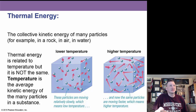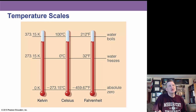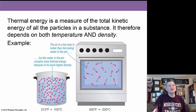Thermal energy is the collective kinetic energy of many particles related to temperature. Temperature is the average kinetic energy of the many particles in a substance. In science, we use three temperature scales: Fahrenheit (water freezes at 32°, boils at 212°), Celsius (freezes at 0°, boils at 100°), and the Kelvin scale, which is a derivation of the Celsius scale used more in astronomy. Thermal energy depends on both the temperature and the density of an object.